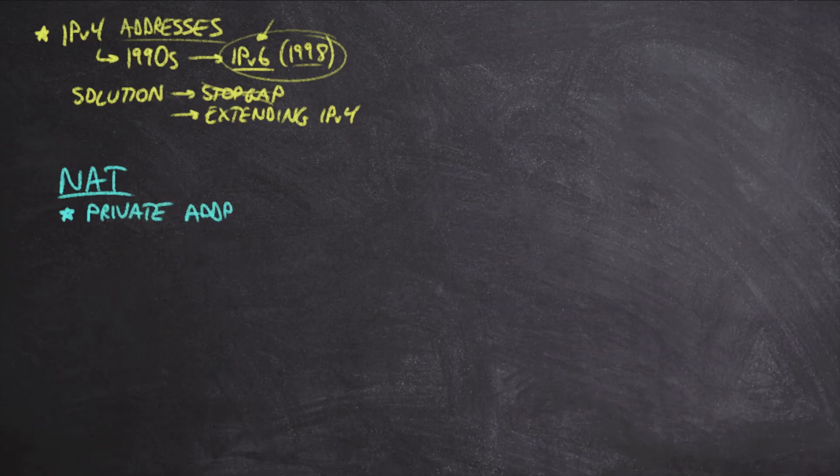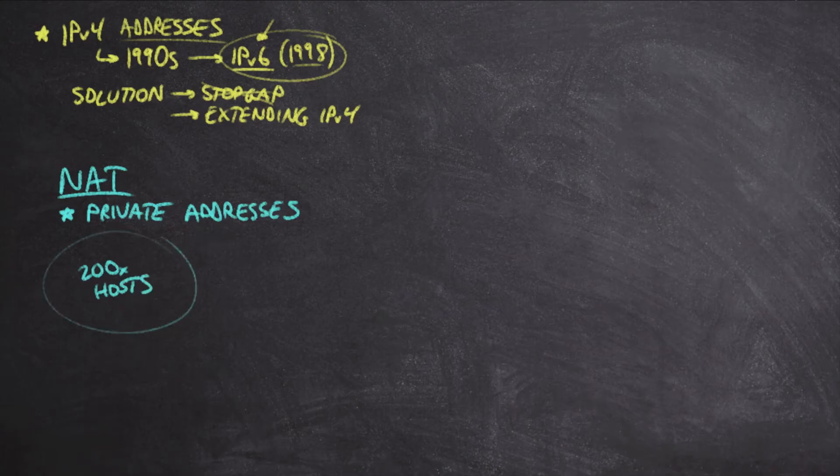So here's the situation. We have a network, let's say, of 200 hosts, and back before NAT and before IP version 6, these all needed to be public IP addresses.